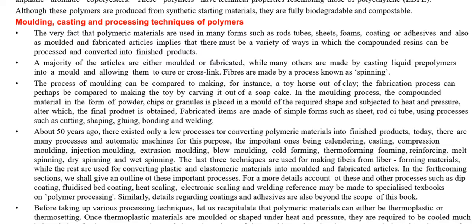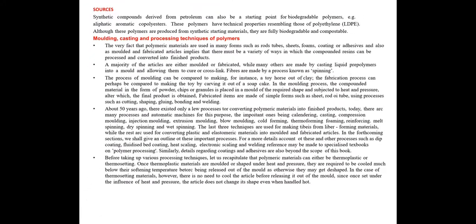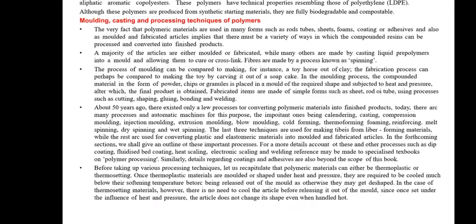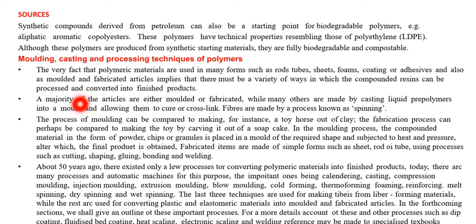Fabricated items are made from simple forms such as sheet, rod, or tube using processes such as cutting, shaping, gluing, bonding, and welding.